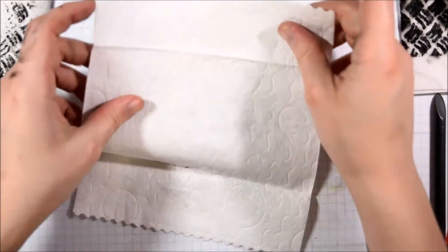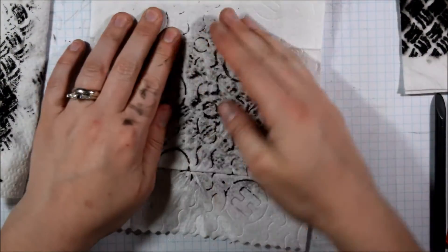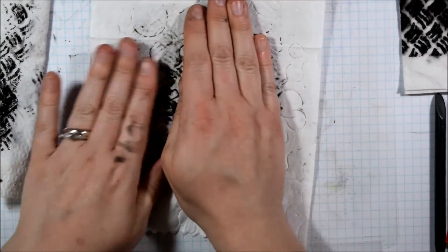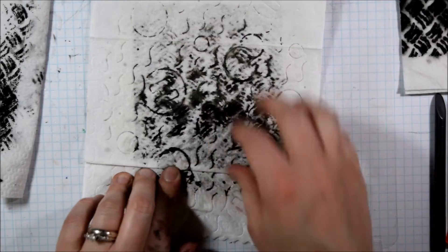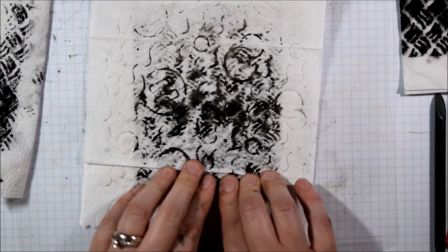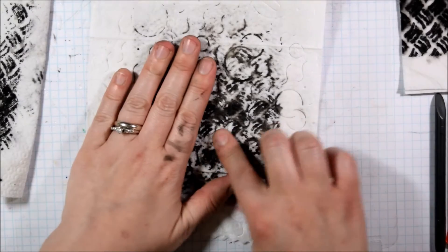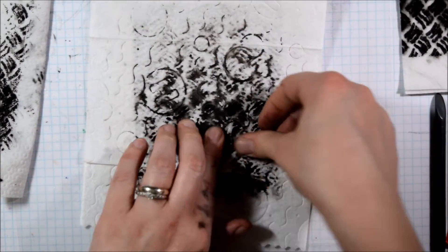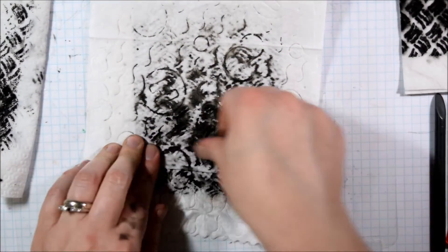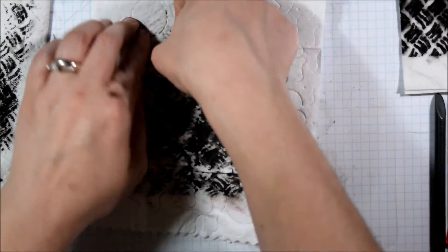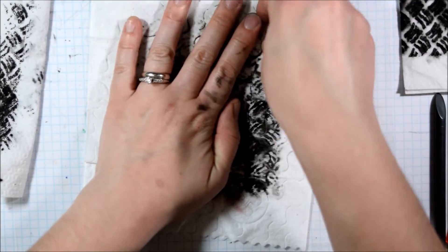So once I had the black layer on there, I taped my stencil to my background panel so that it would not move. And then I spritzed it once again with water. This is the first time I'm activating the black with water. And I took a thick baby wipe and place it over it. And now I am smushing the baby wipe into the stencil, really trying to pull up as much color as I can.